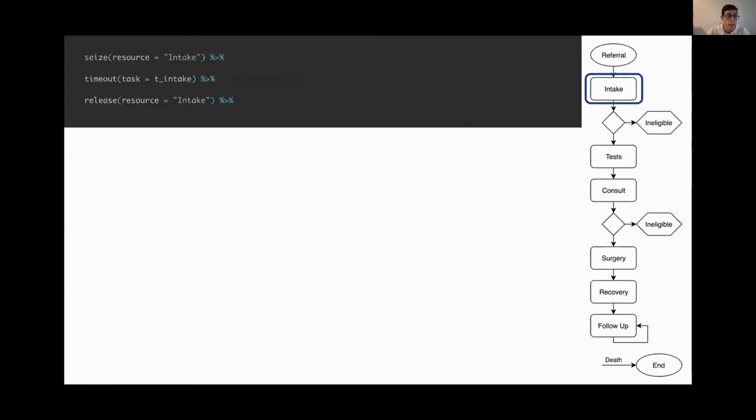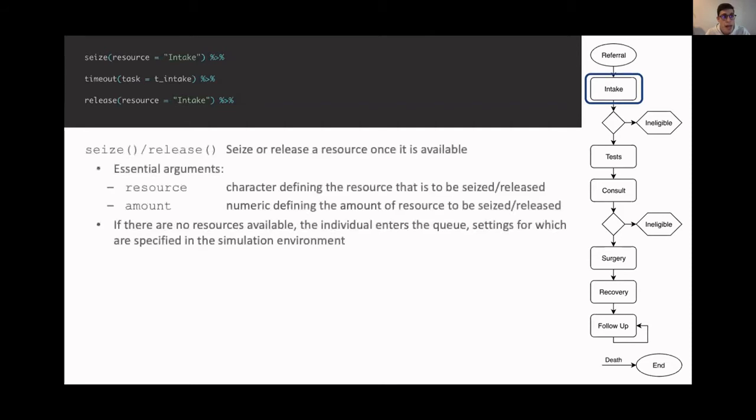The next step is to model the intake. This is the first time where we actually consider a resource. We model the use of resources using the seize and release functions to, respectively, seize and release resources once they are available. We have to specify the name of the resource as well as the amount we want to seize and release. And the default for that is one, so it isn't specified here. It's important to realize that if no resources are available, the individual enters the queue.